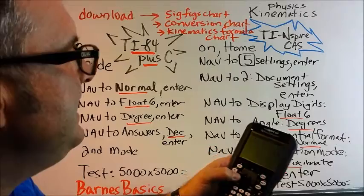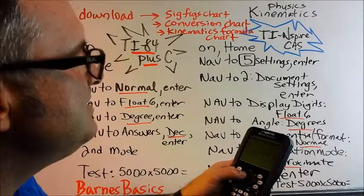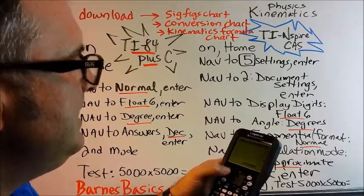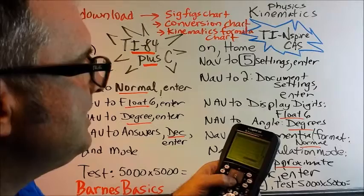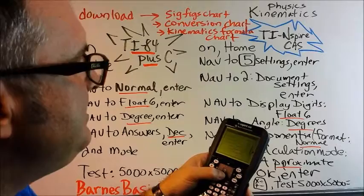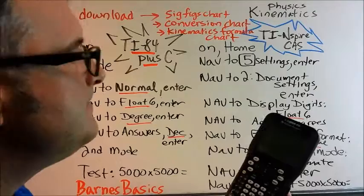And then we are going to navigate to exponential format, which is the next one down. And we want that to be in normal mode. It may already be in normal mode. So if it is, just leave it alone. We are going to navigate to the calculation mode and pick approximate. So go to calculation mode and click that. And it will drop down the menu. Click or select approximate. Hit enter. And then let's navigate to OK at the very bottom right. Just nav pad down, down, down. And it will eventually get to the OK and then hit enter.